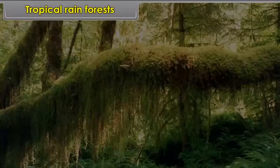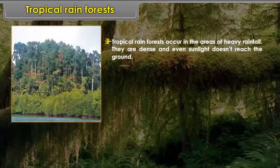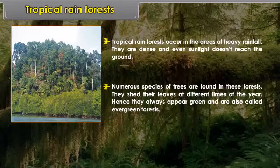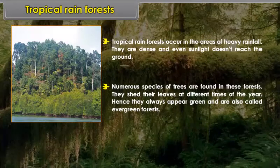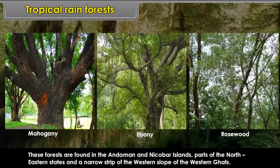Tropical rainforests occur in areas of heavy rainfall. They are dense and even sunlight does not reach the ground. Numerous species of trees are found in these forests. They shed their leaves at different times of the year, so they always appear green and are also called evergreen forests. Mahogany, ebony and rosewood are important trees. These forests are found in the Andaman and Nicobar Islands, parts of the northeastern states and a narrow strip of the western slope of the Western Ghats.